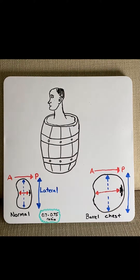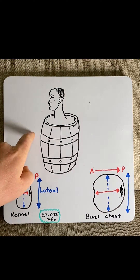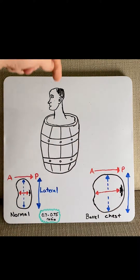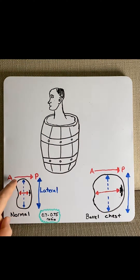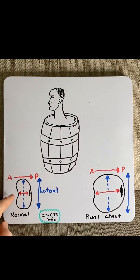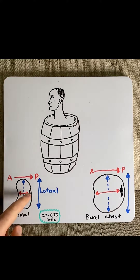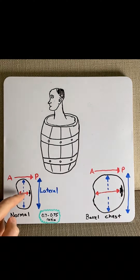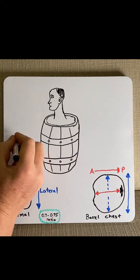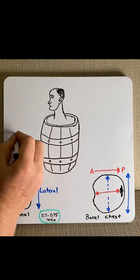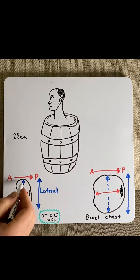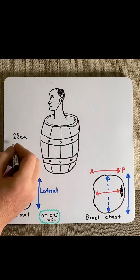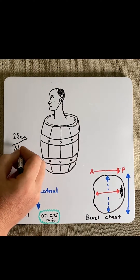The normal human chest is oval shaped. If I was to do a transverse cut through the chest and look down birds eye view, what you will see is the chest is shaped like an oval. The anterior posterior diameter, or the front to back length, is less than the lateral or side to side. The anterior posterior length or diameter is typically 23 cm, while the lateral diameter is 31 cm.